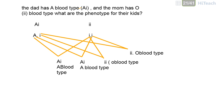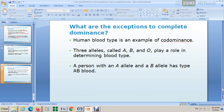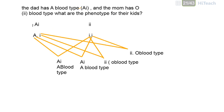Before I give you the next example, let's go back to this one. This one is heterozygous because it contains two different alleles. This one is homozygous. I want you to differentiate between these two.